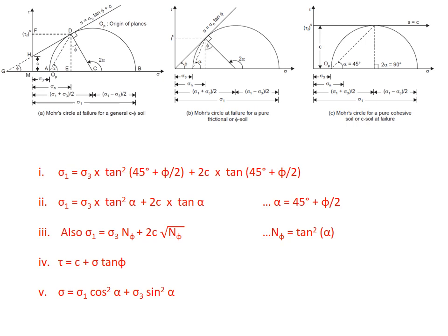Also three diagrams are displayed here. The first one is for c and phi soil where you can see a failure plane given by Mohr-Coulomb as s equals c plus sigma tan phi. In the second figure you might see that there is no cohesion, that means it is a frictional soil or sandy soil.